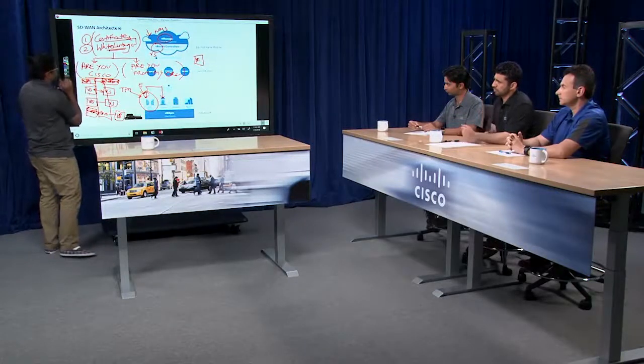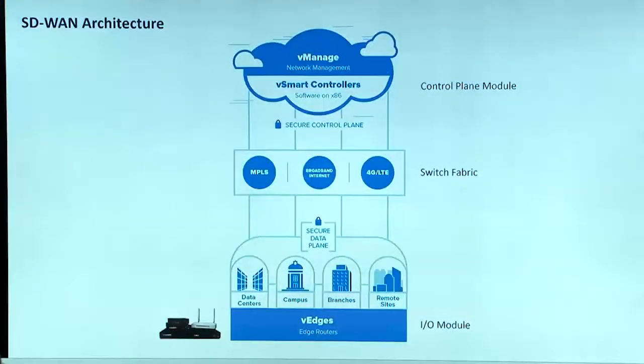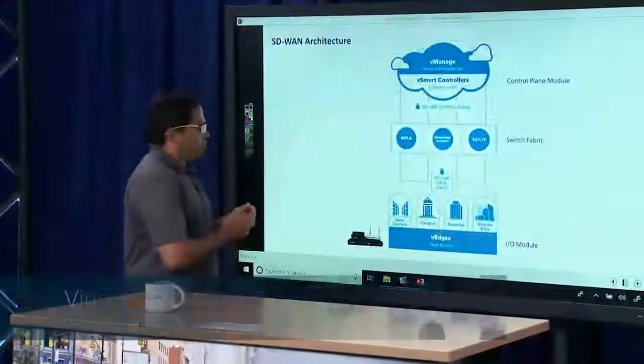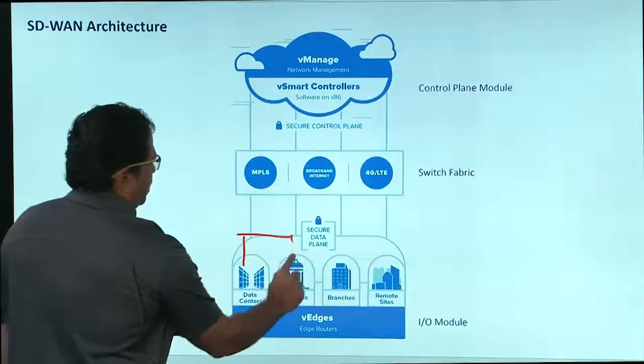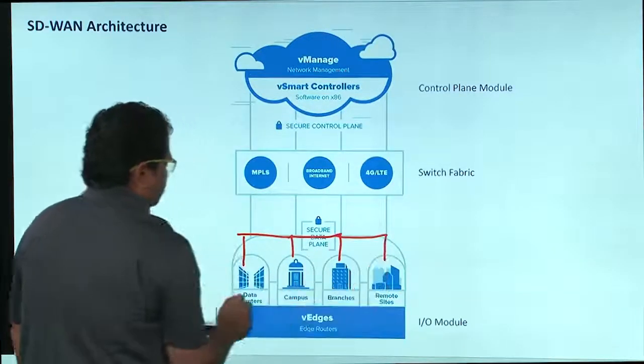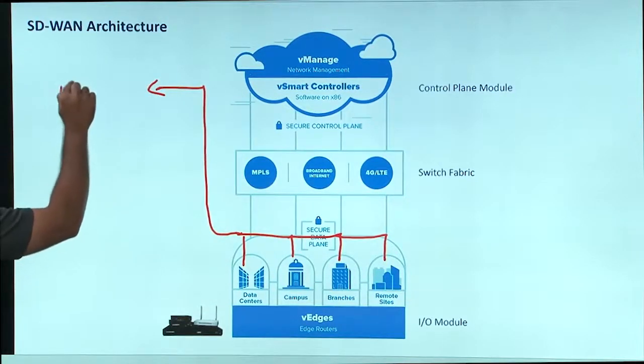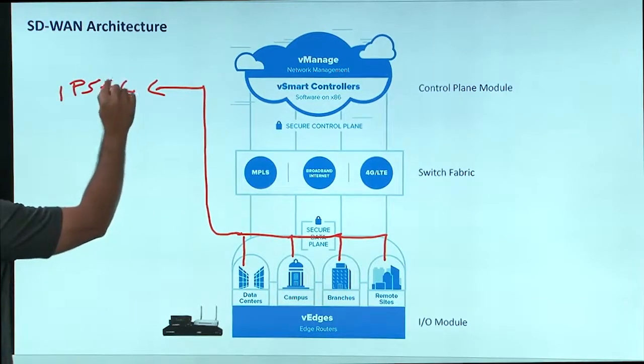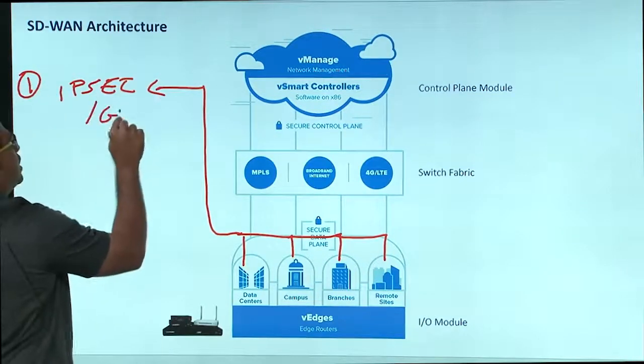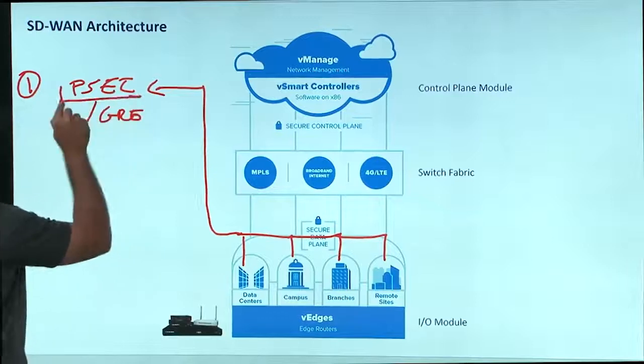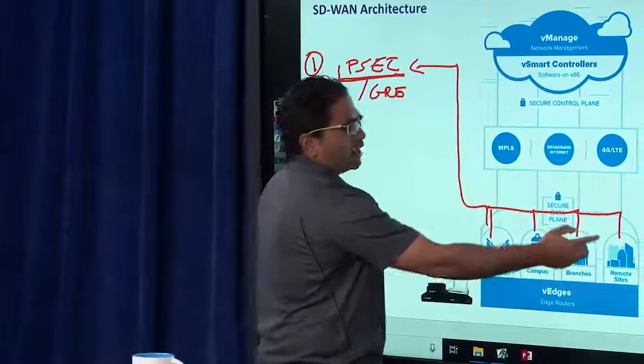Moving on, we'll talk about the data plane now, since the control plane is securely brought up. What we want to do and what the whole SD-WAN solution is, is to securely connect edges. What do we mean by securely connect? We want to connect it using IPsec tunnels. We could also use GRE, but essentially what we use in our data plane is IPsec to connect all the edges to each other.